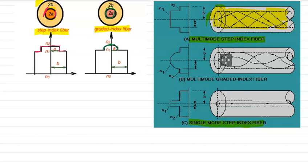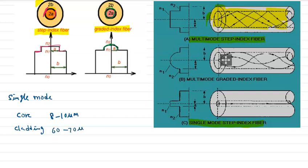For a single mode step index optical fiber, the core diameter is 8 to 10 micrometers. The cladding outer diameter is between 60 to 70 micrometers.